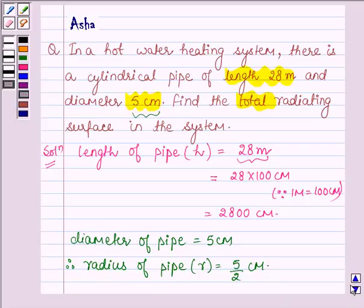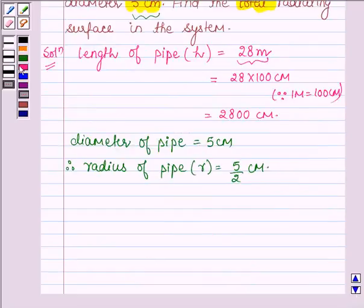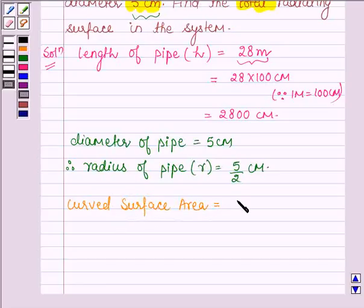Now we have to find the total radiating surface in the system, and that will equal the surface area of the cylindrical pipe. The formula to calculate the curved surface area of a cylinder is 2πrh.